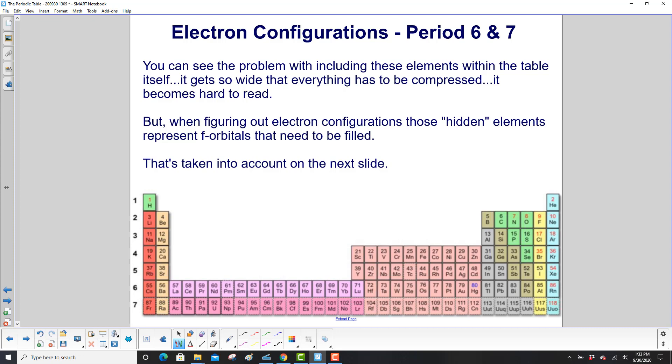So here's the problem and why all of these elements here are typically shown at the bottom of the periodic table. Because if we put them in the right place, this table gets too wide. It gets so wide that everything has to be compressed. It becomes hard to read. But when figuring out electron configurations, these hidden elements represent f orbitals that need to be filled.